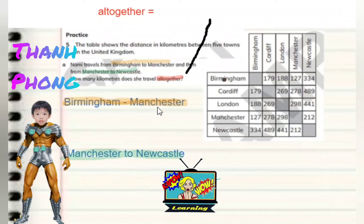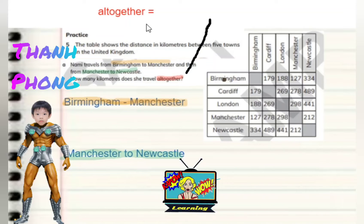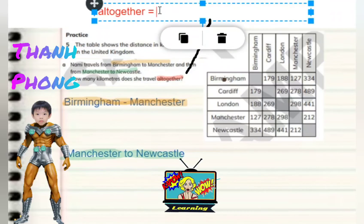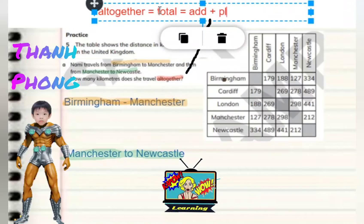I've highlighted Birmingham to Manchester, so we need to find that, and we need to find Manchester to Newcastle. What does 'altogether' mean? Total. Yeah, so total means we add — add or plus.